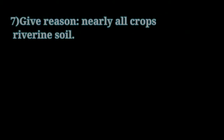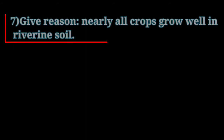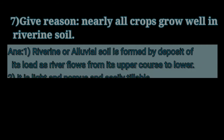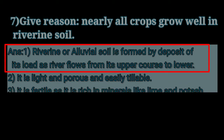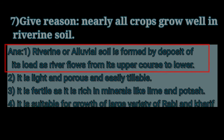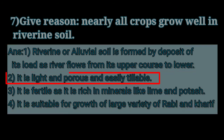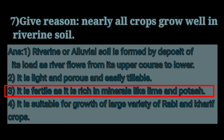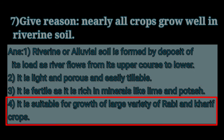Give reason: Nearly all crops grow well in riverine soil. Riverine or alluvial soil is formed by deposit of river load as it flows from upper to lower course. It is light, porous, and easily tillable. It is fertile as it is rich in minerals like lime and potash. It is suitable for growth of a large variety of Rabi and Kharif crops.